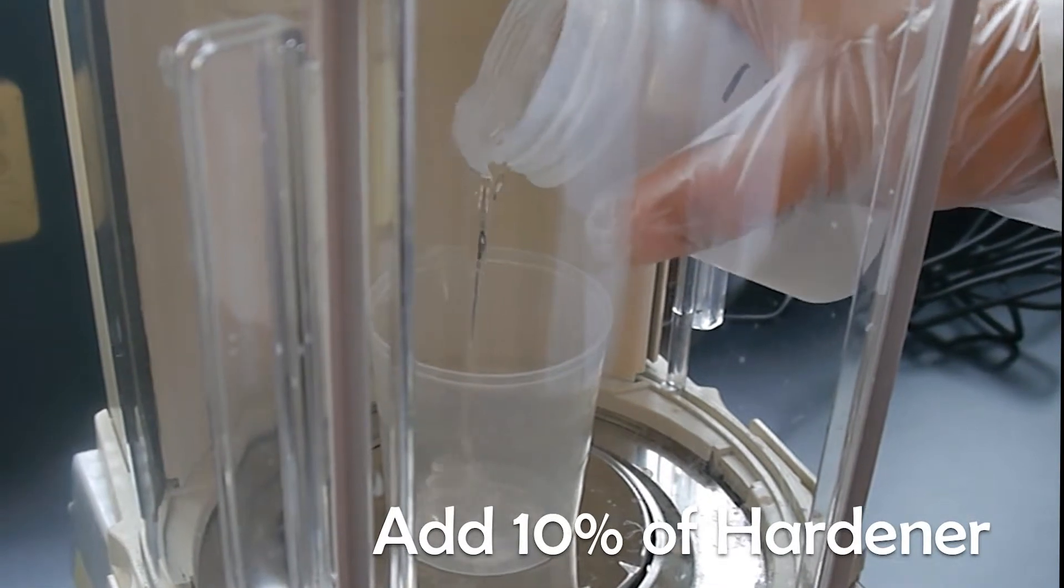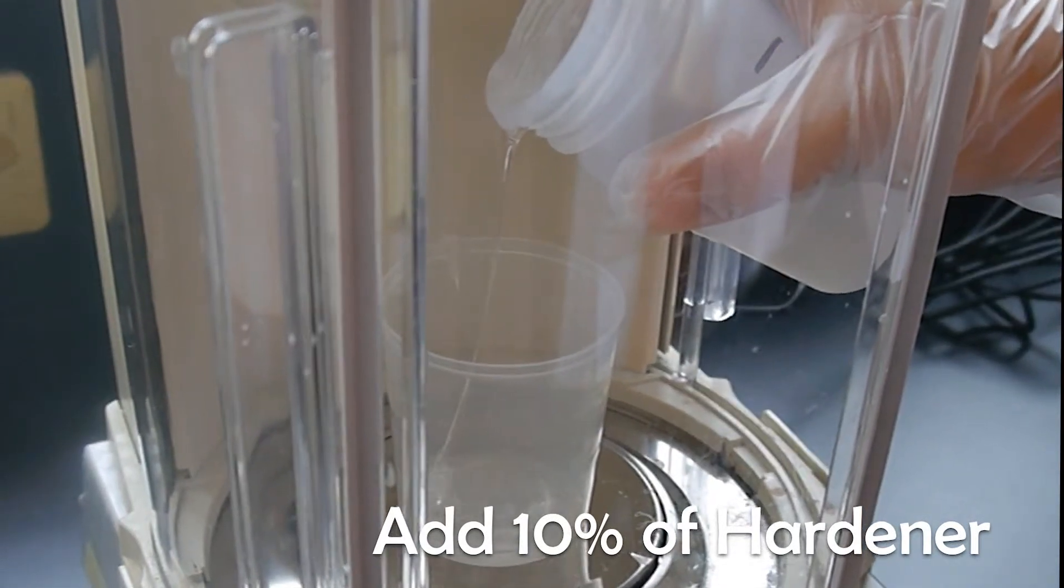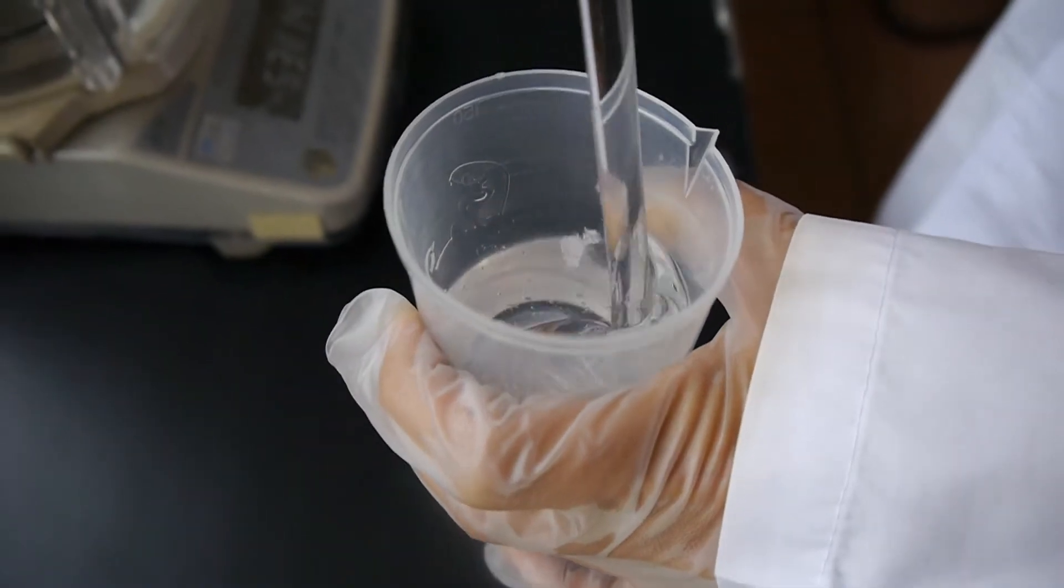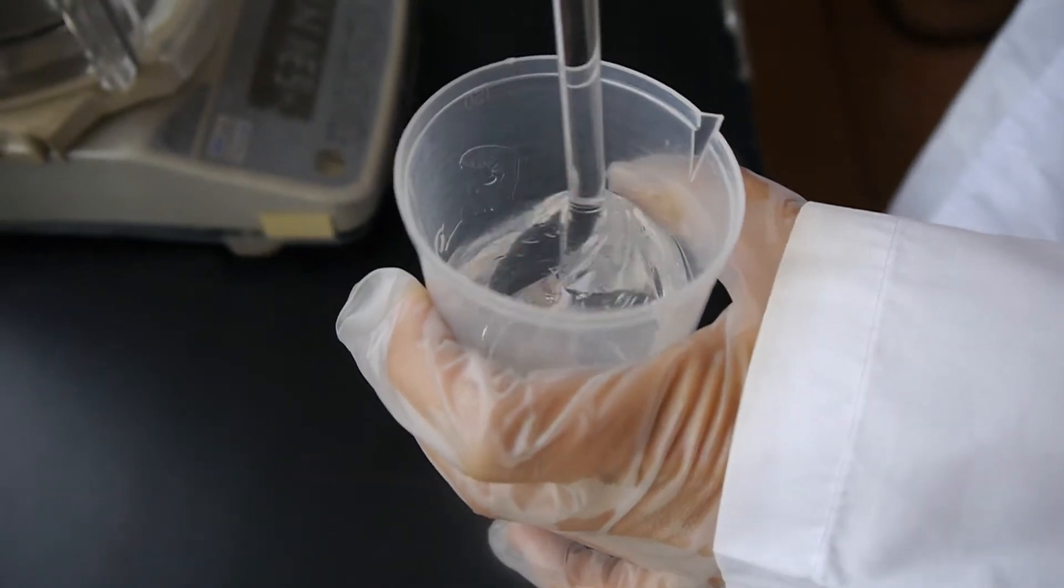Before the laminating process, we should add 10% hardener inside. After fully mixing, we can start to coat the glue.